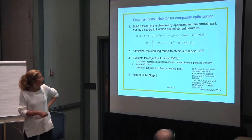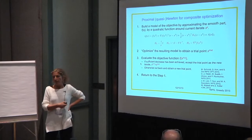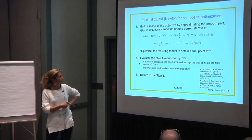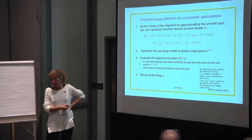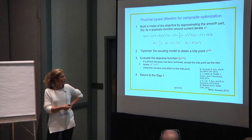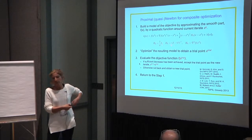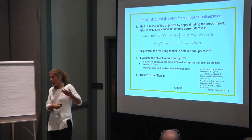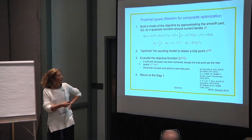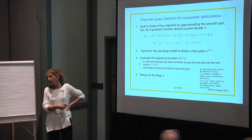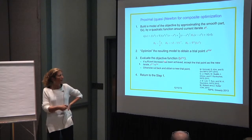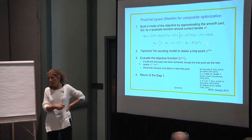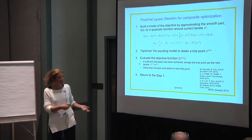In the last few years, starting roughly around 2010, there has been a systematic effort on proximal Newton methods. Instead of a linear approximation you have a quadratic approximation where H is some matrix — it can be the Hessian, a low-rank L-BFGS approximation, or just a diagonal matrix which reduces back to proximal gradient. The proximal Newton method optimizes this subproblem to obtain a trial point, computes the true function value, does backtracking or line search to ensure sufficient decrease, and repeats.